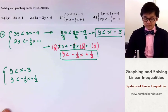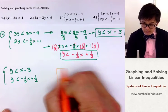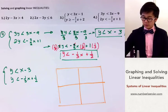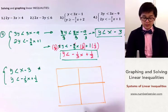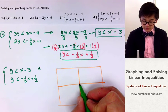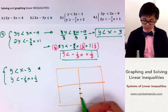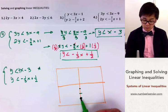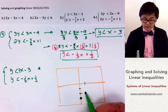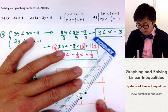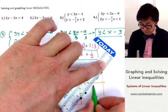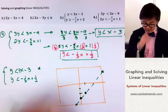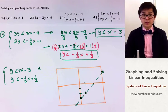Just like problem 3, we graph both inequalities on the same axis. Using the green marker for y less than x minus 3, we start at negative 3 and move up 1 and across 1 for the slope. This is a broken line because there's no equal sign, and since it's less than, we shade below the line.